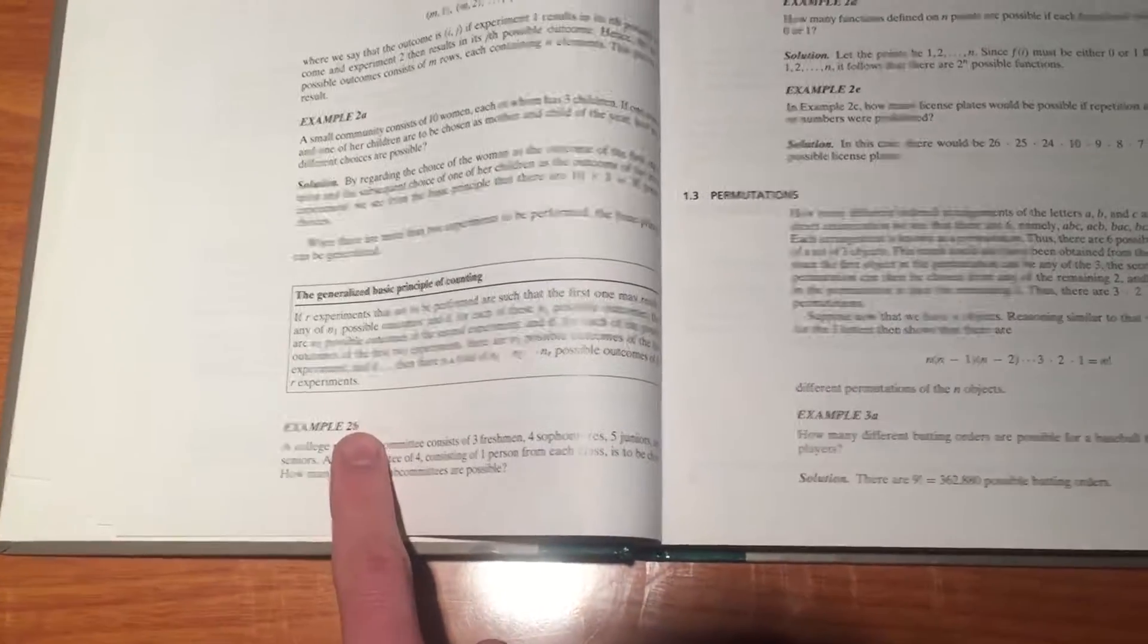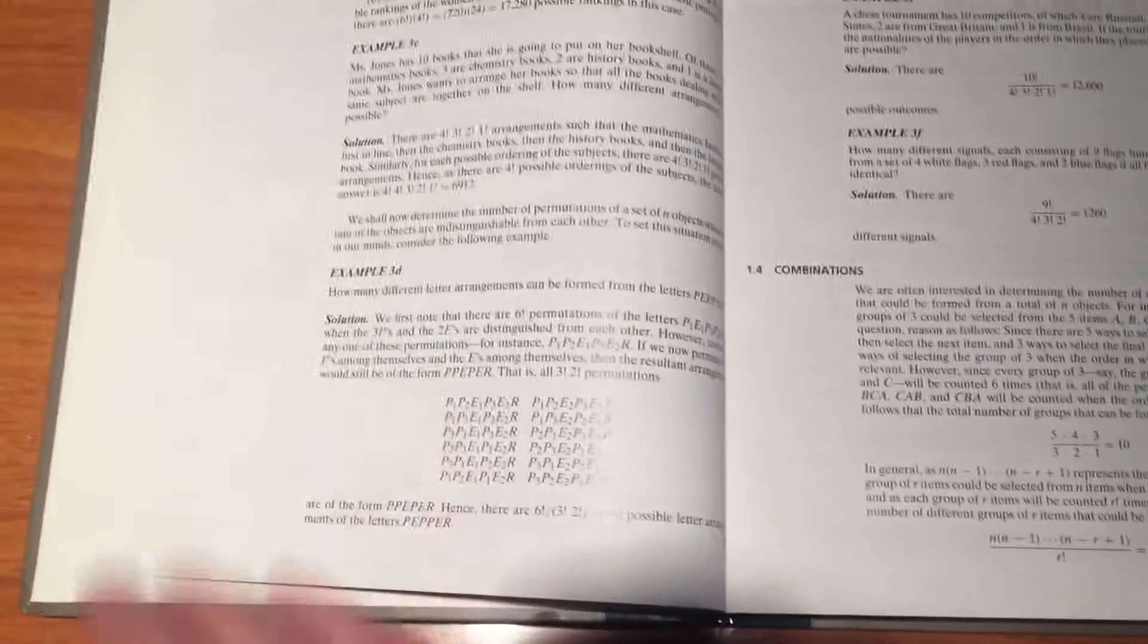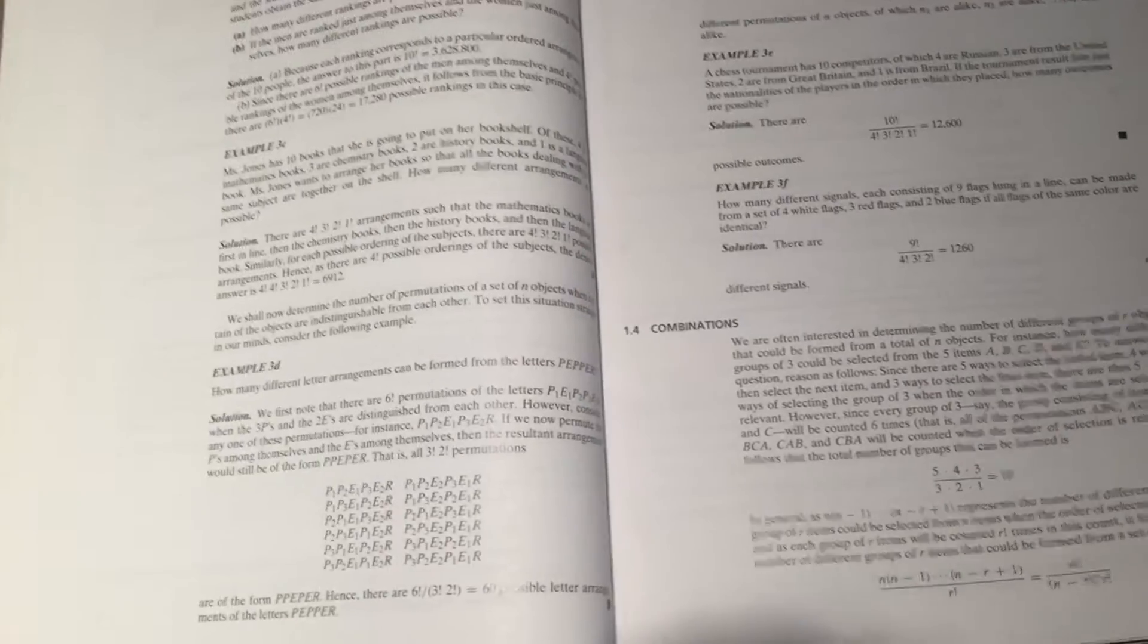So you can see there's example two B, C, D, and E. So there's lots and lots of examples that are fully worked out. That's very nice.